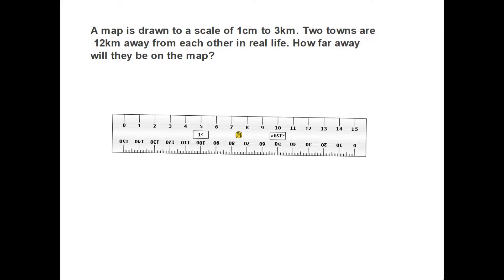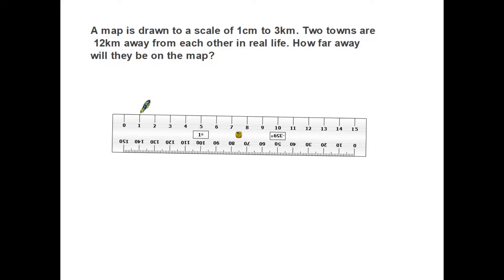Here's a question where we are asked to work out the opposite — we are given a real-life distance and asked to calculate what it would be on a map. Let's look again: a map is drawn to a scale of one centimeter to three kilometers. Note they haven't used an equals sign here, they've written the word 'to' — it means exactly the same thing. We have two towns that are 12 kilometers away from each other in real life. How far will they be on the map?